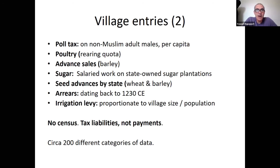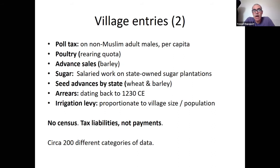There are also advanced sales of barley, sugar, work on sugar plantations and presses, seed advances, and arrears dating back 13 years and more — tabulated for around 200 different categories of data, not all of them for every village. One important caveat: there is no census of the population, so we don't know how many people lived in each village. These are tax liabilities, not actual payments, compiled from reports made by local tax officials or village headmen.